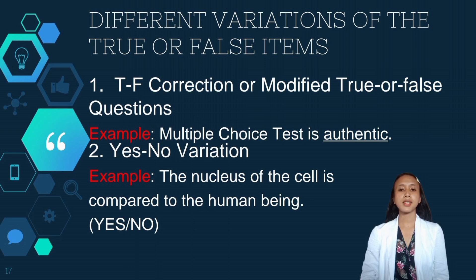The second one is yes or no variation. In this format, the learner has to choose yes or no, rather than true or false. Example, the nucleus of the cell is compared to the human being. So the students will just answer yes or no.